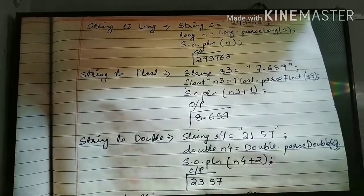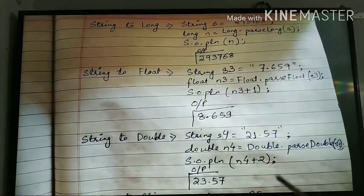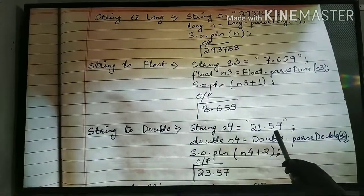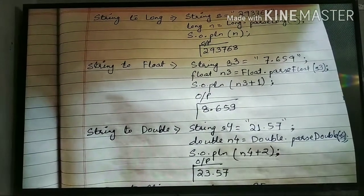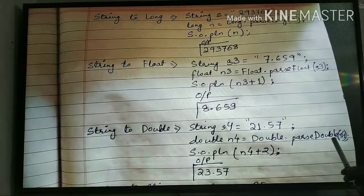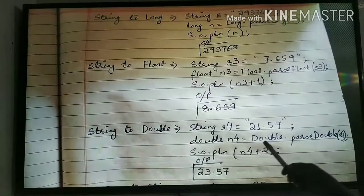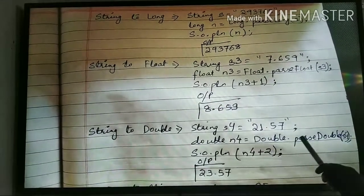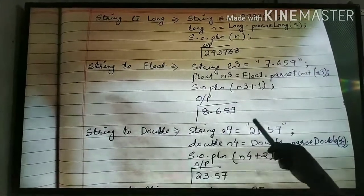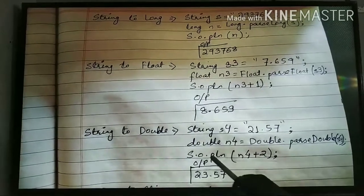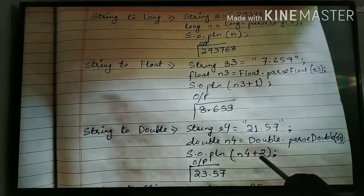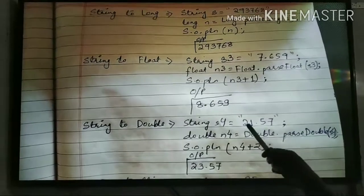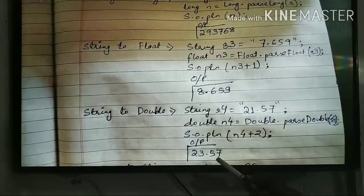Now another method — string to double. String s4 = "21.57" — again this is of string type because it is within double quotes. Now we have the parseDouble method of wrapper class Double. It will convert s4 into double type. So n4 has the double value of 21.57. Now system.out.println(n4 + 2), that means 21.57 plus 2, so 23.57 is the output.